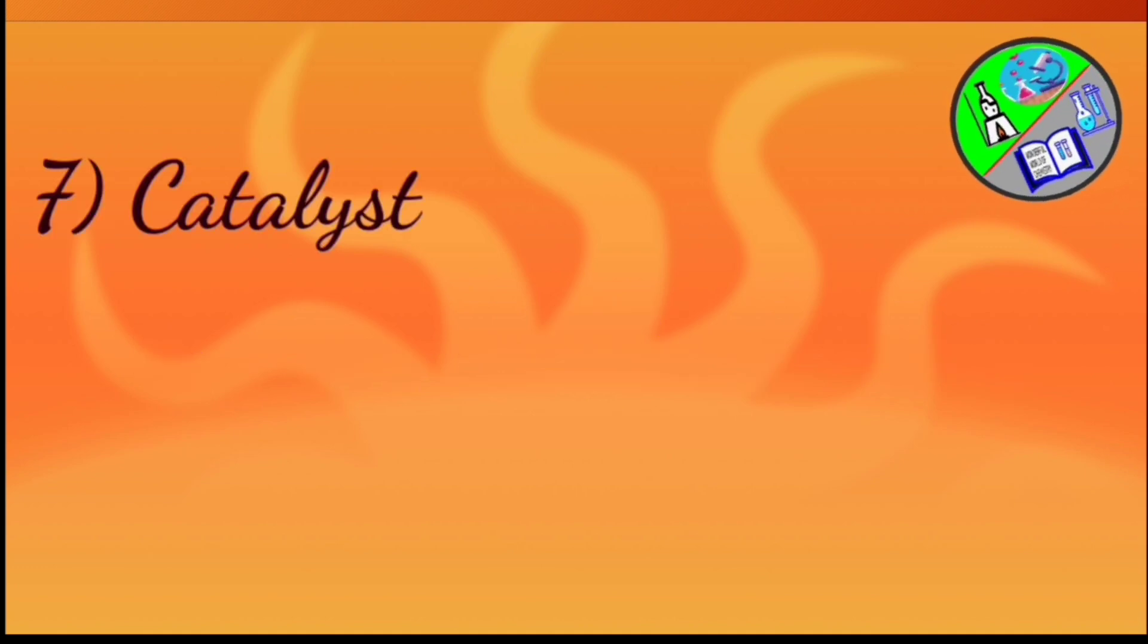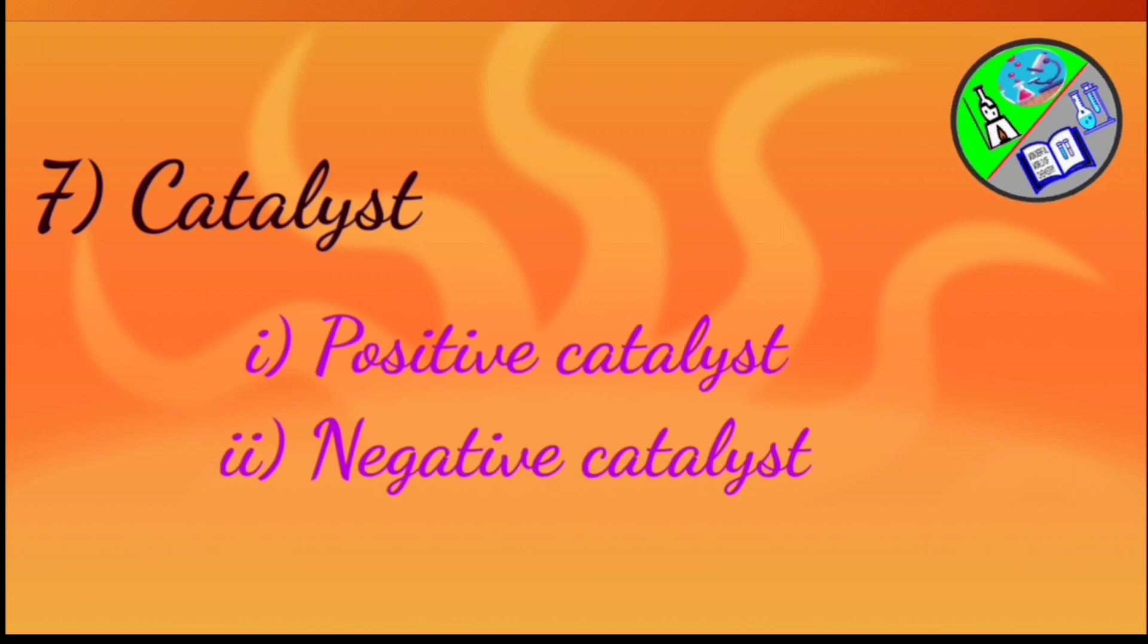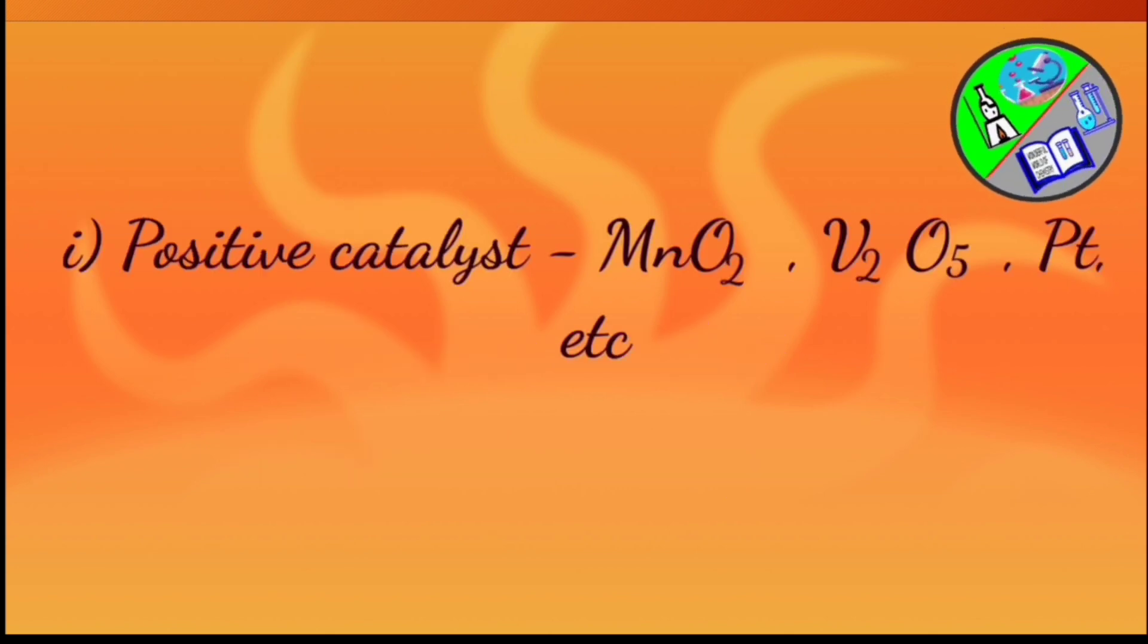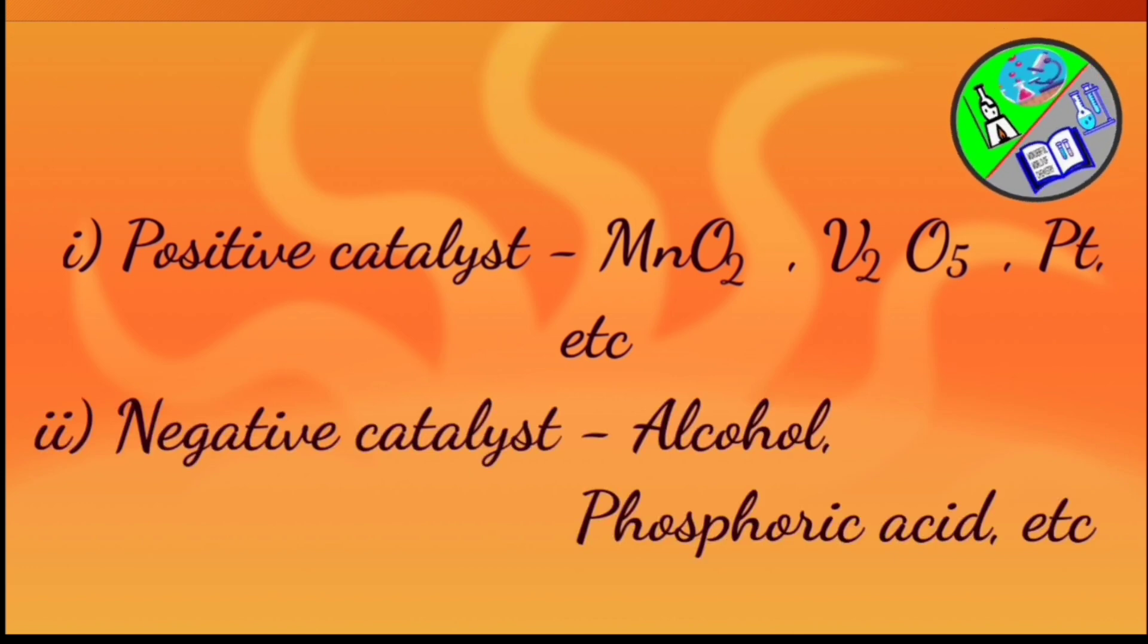And the last condition is catalyst. Some reactions take place in presence of catalyst. These are the chemical substances which alter the rate of chemical reaction. They can be positive or negative. The positive catalysts are the chemical substances which increase the rate of reaction, for example manganese dioxide, vanadium pentoxide, platinum, etc. And the negative catalysts are the chemical substances which decrease the rate of chemical reaction, for example alcohol, phosphoric acid, etc.